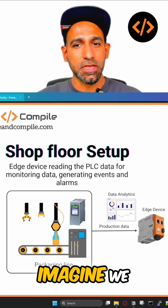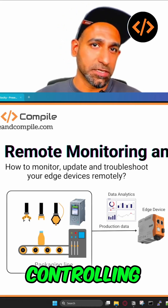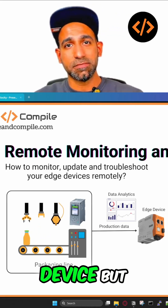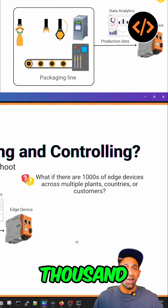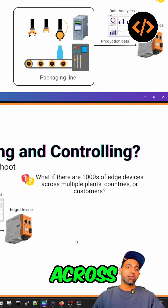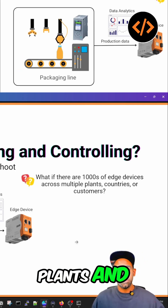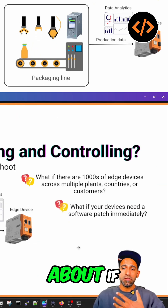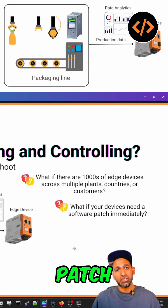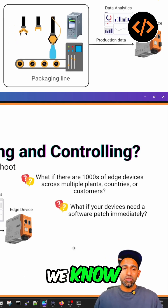So let's imagine we are talking about remote monitoring and controlling of one Edge device. But what if we have 1000 Edge devices spread across different countries, different plants and different locations? And what if your device needs a software patch immediately? How can we do that?